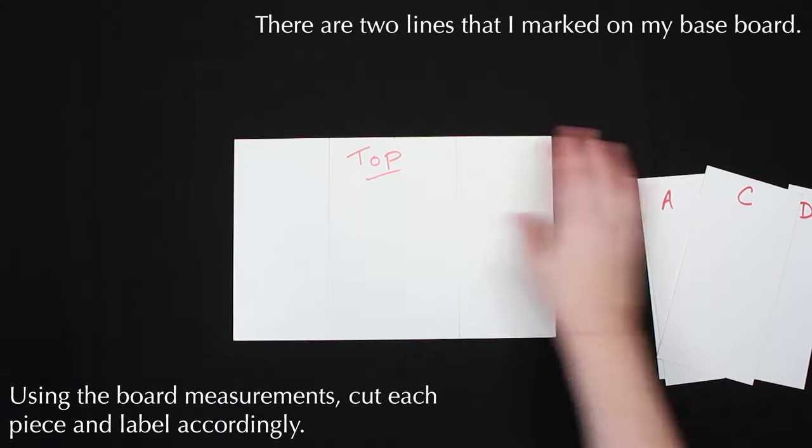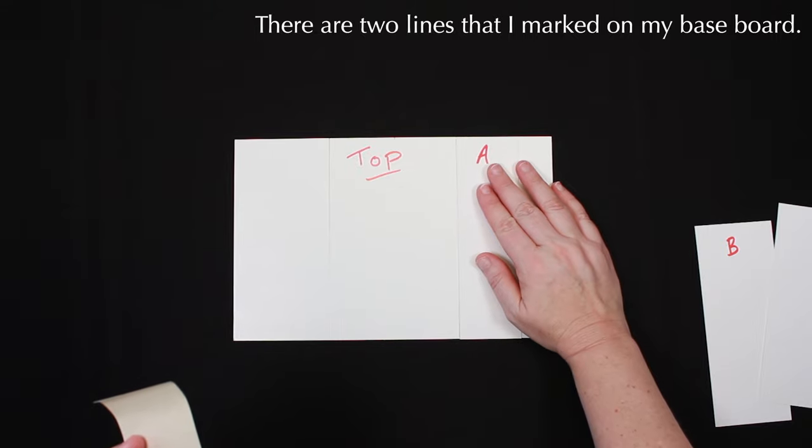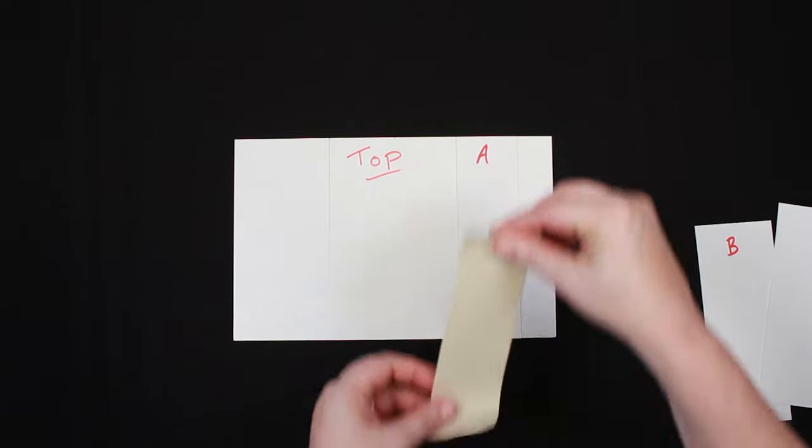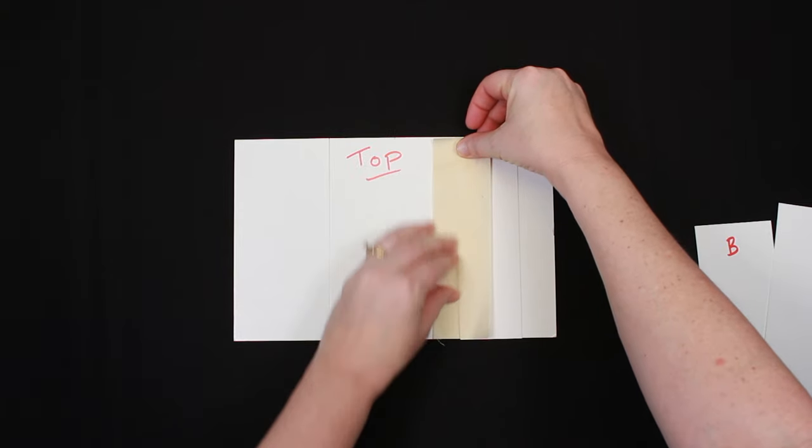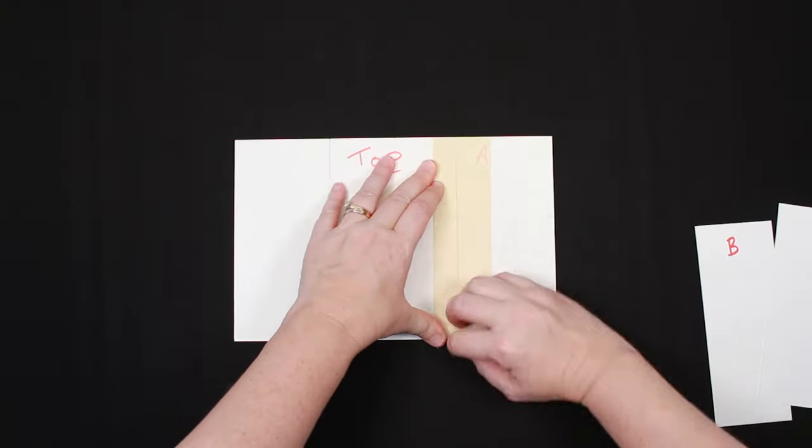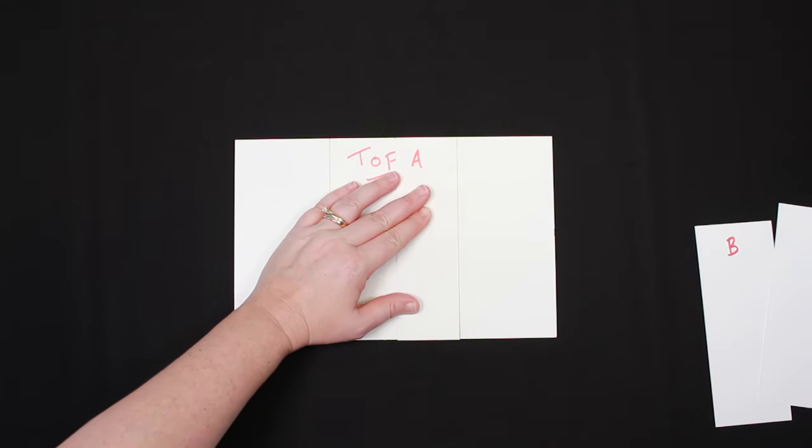Take piece A and align that on the right side of the line that is on the right. Secure piece A with a piece of tape. I'm using extra wide masking tape. Once piece A is aligned and secure, flip it over and secure the other side in the same manner.